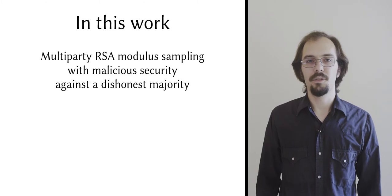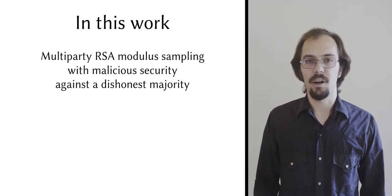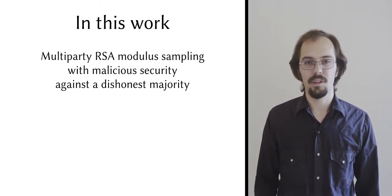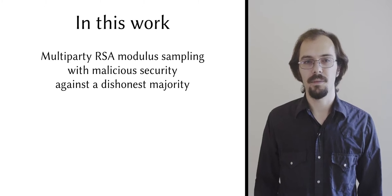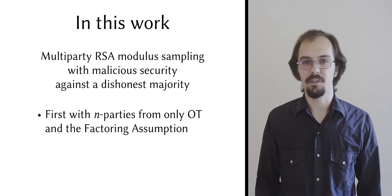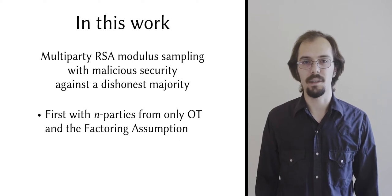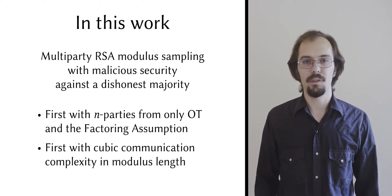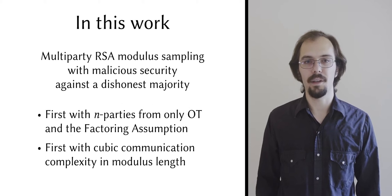In this work, we introduce a new protocol for distributed RSA moduli sampling with malicious security against a dishonest majority in the UC model. Ours is the first such protocol from only oblivious transfer and the factoring assumption to support an arbitrary number of parties, and so far as we know, the first to achieve cubic complexity or better in the length of the modulus.